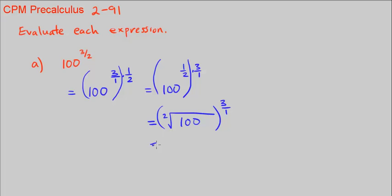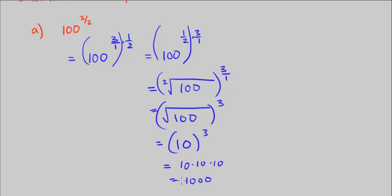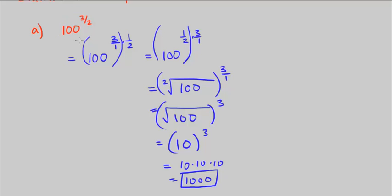The square root of 100 — what times itself equals 100? If you multiply 10 by itself, 10 times 10 is 100. Then cubed: 10 cubed is 10 times 10 times 10. 10 times 10 is 100, times 10 is 1,000. So this is the answer to part A: 100 to the power of 3 halves equals 1,000.